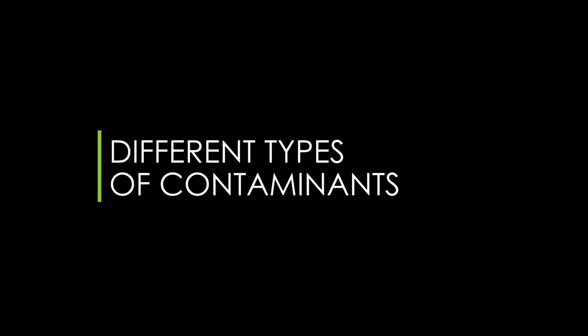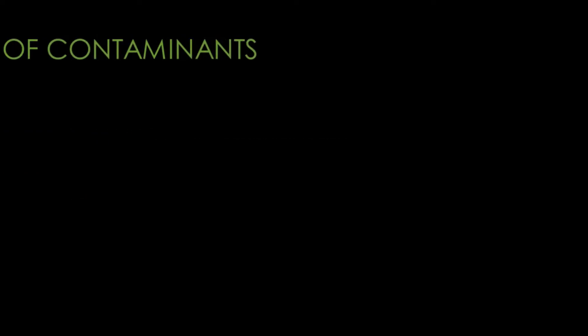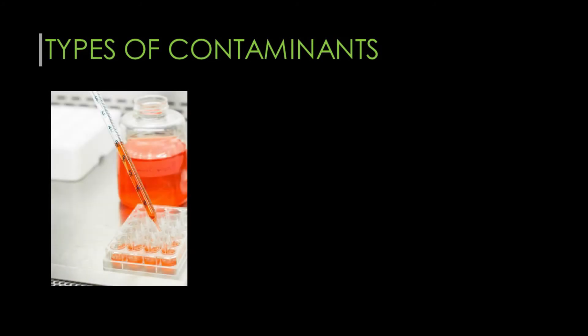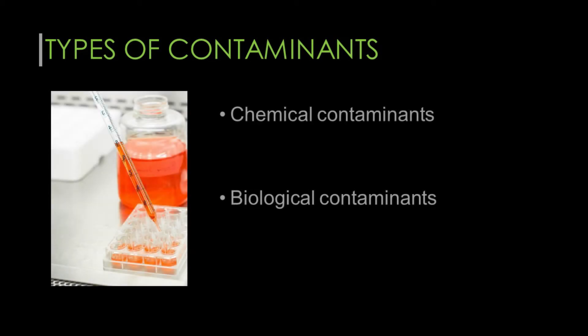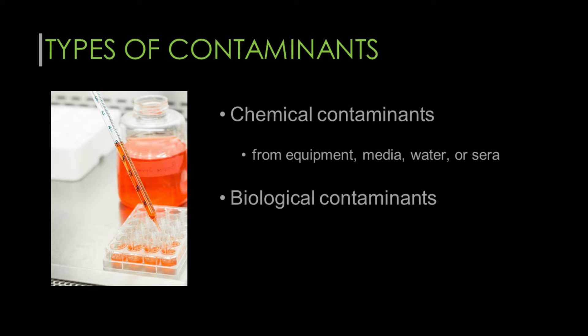What are the different types of contaminants in cell culture? There are two types of contaminants: chemical contaminants and biological contaminants. Chemical contaminants usually come from equipment, media, water, or serum. Biological contaminants include bacteria, fungi, yeast, and viruses.